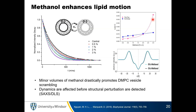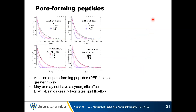Once we establish we have to be conscious of what the methanol is doing to the system, let's look at what's happening with the pore-forming peptides — alamethicin and melittin. You can see systematically that with the addition of more and more peptide, the flip-flop rate — the rate at which these vesicles scramble — increases. More peptide, more lipid motion. That seems reasonable.